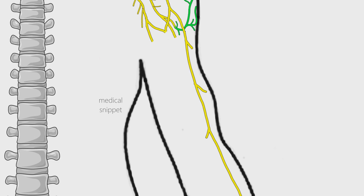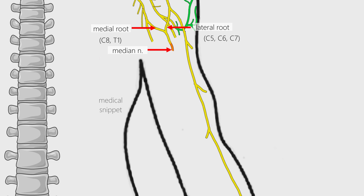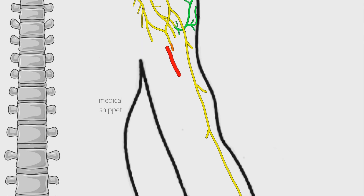Median nerve is formed by two roots — the medial and lateral roots. The medial root of median nerve is a branch of medial cord, and the lateral root of median nerve is a branch of lateral cord of the brachial plexus. So it has C5 to T1 nerve fibers. The median nerve passes down the arm along with brachial artery — first it lies lateral to the artery, then it passes anteriorly and reaches medial to the brachial artery in the lower arm. In the arm, median nerve does not supply any sensory or motor innervation.